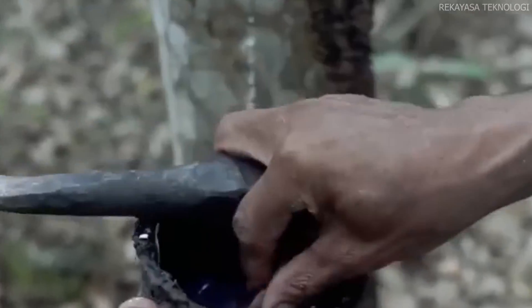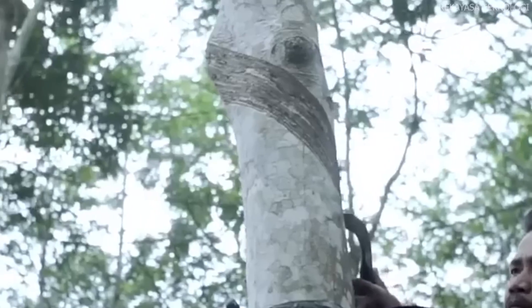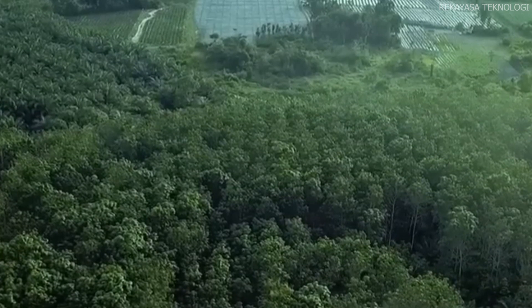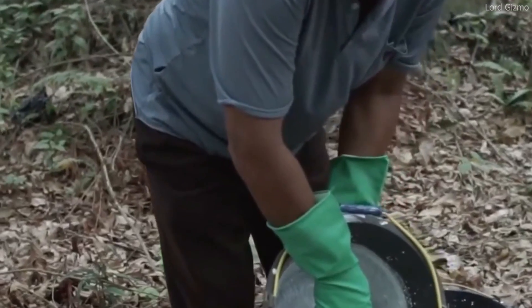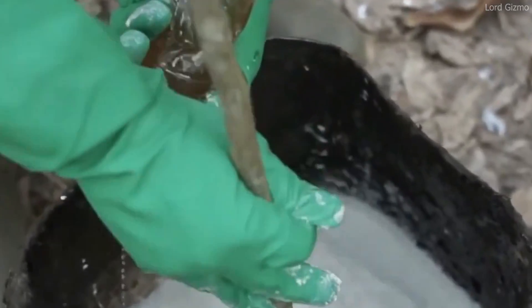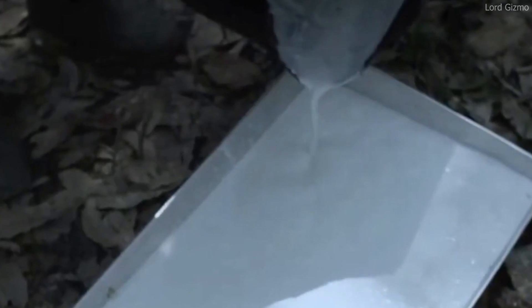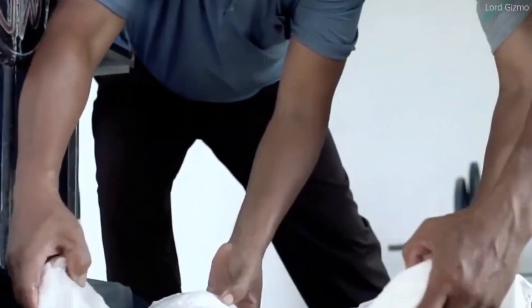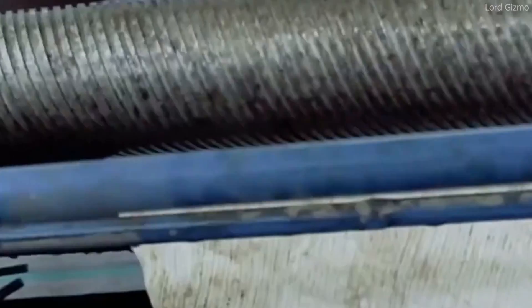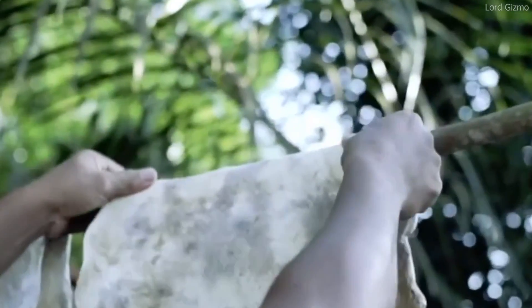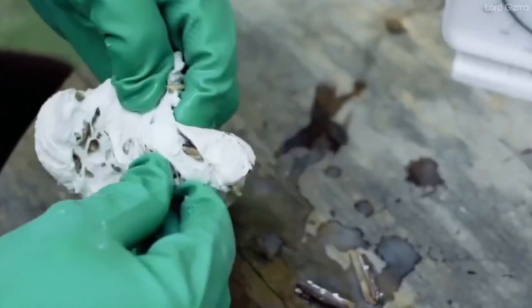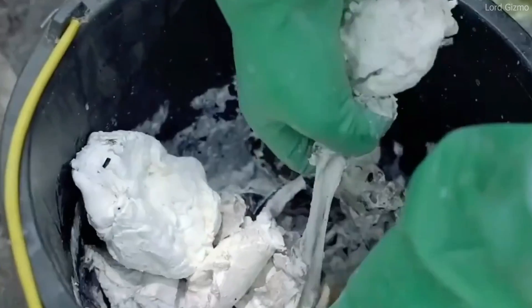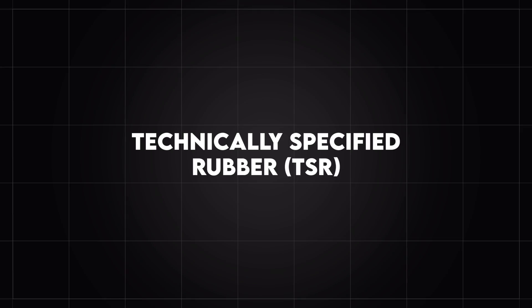The most commonly used grades include ribbed smoked sheets (RSS), technically specified rubber (TSR), and centrifuged latex. Ribbed smoked sheets, commonly known as RSS, are produced by coagulating raw latex, rolling it into thin sheets, and drying it in smokehouses. The smoking process enhances the durability and resistance of the rubber, making it suitable for demanding applications. RSS is primarily used in automotive parts, industrial products, and tire manufacturing. Its excellent mechanical properties make it an essential material for heavy-duty applications that require high elasticity and strength.